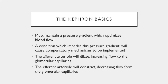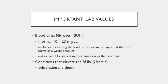Important lab values: we have blood urea nitrogen, the BUN. The normal values of BUN are 10 to 23 milligrams per deciliter — this varies by laboratory, but generally 10 to 23. This measures serum nitrogen that the liver forms as a waste product from metabolism. It's not as useful for indicating renal function as serum creatinine. An elevated BUN level is called uremia. Conditions causing BUN elevation include dehydration and shock.